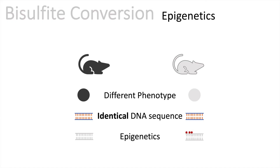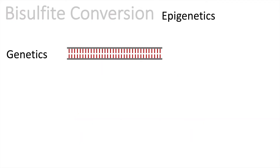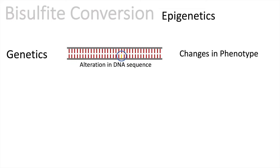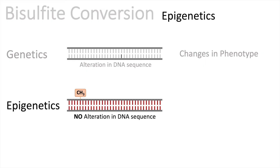The mice have the same DNA sequence but different epigenetic patterns. In genetics, a mutation can alter the DNA sequence and this can possibly lead to changes in the phenotype. However, in epigenetics we have no alteration in the DNA sequence itself — not a single nucleotide is changed. Instead, we have a methylation of a cytosine, for example, and methylation or other epigenetic changes such as histone modifications can also change the phenotype.